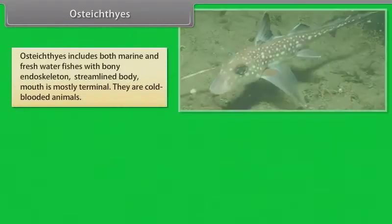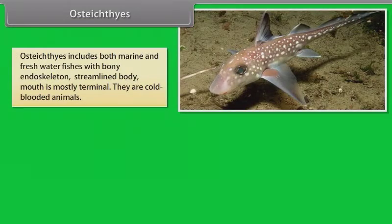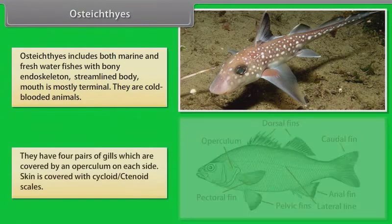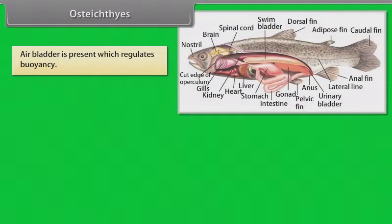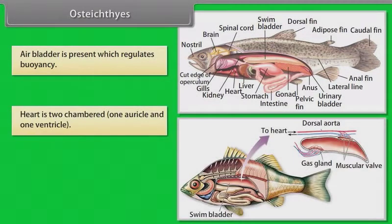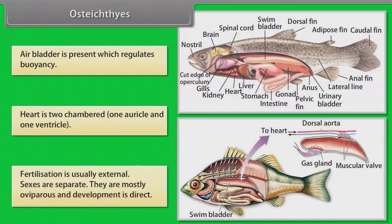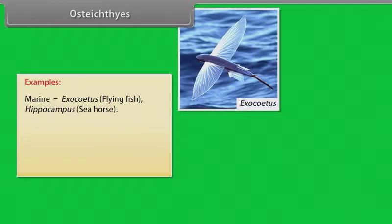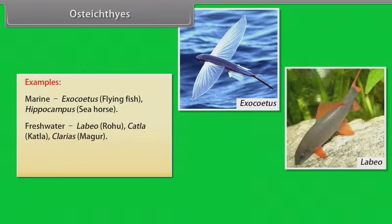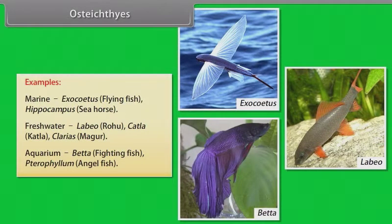Osteichthyes includes both marine and freshwater fishes with bony endoskeleton and streamlined body. Mouth is mostly terminal. They are cold-blooded animals. They have four pairs of gills, which are covered by an operculum on each side. Skin is covered with cycloid or ctenoid scales. Air bladder is present, which regulates buoyancy. Heart is two-chambered: one auricle and one ventricle. Fertilization is usually external. Sexes are separate. They are mostly oviparous and development is direct. Examples — Marine: Exocoetus (Flying Fish), Hippocampus (Sea Horse). Freshwater: Labeo (Rohu), Catla. Aquarium: Betta (Fighting Fish), Pterophyllum (Angel Fish).